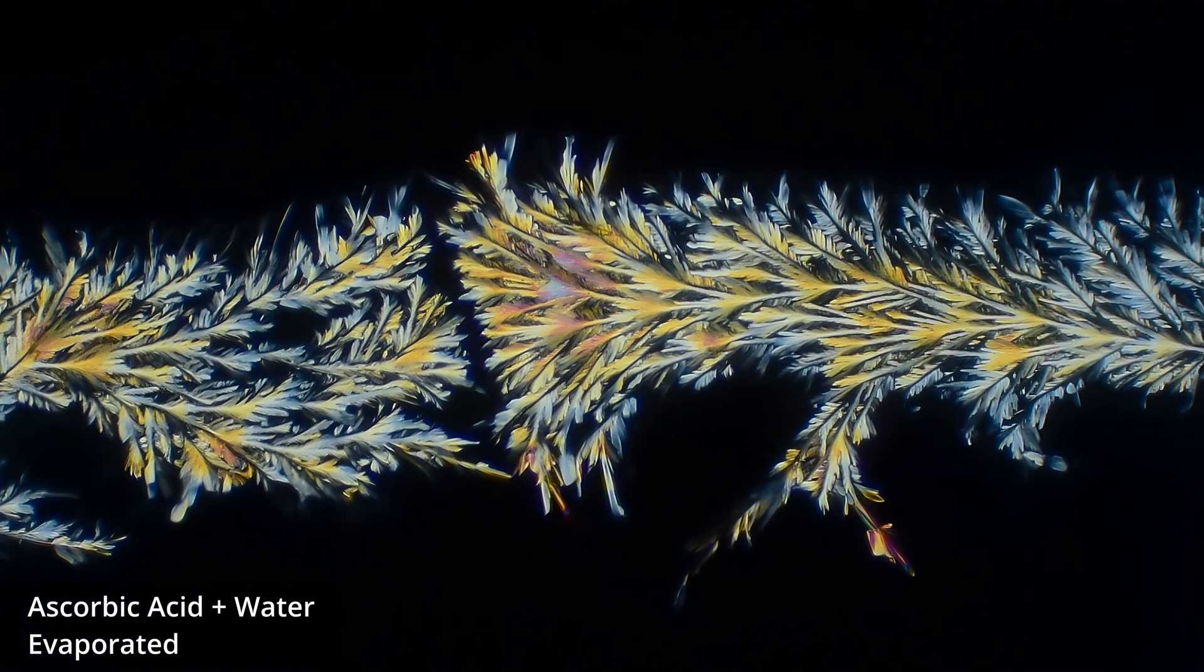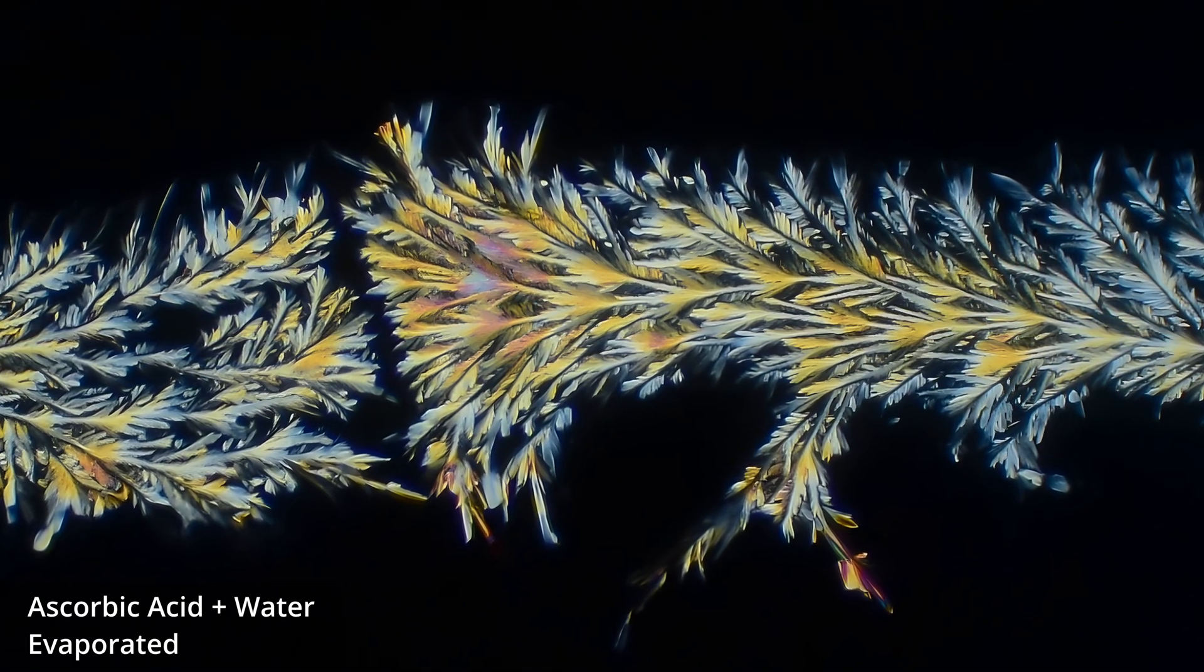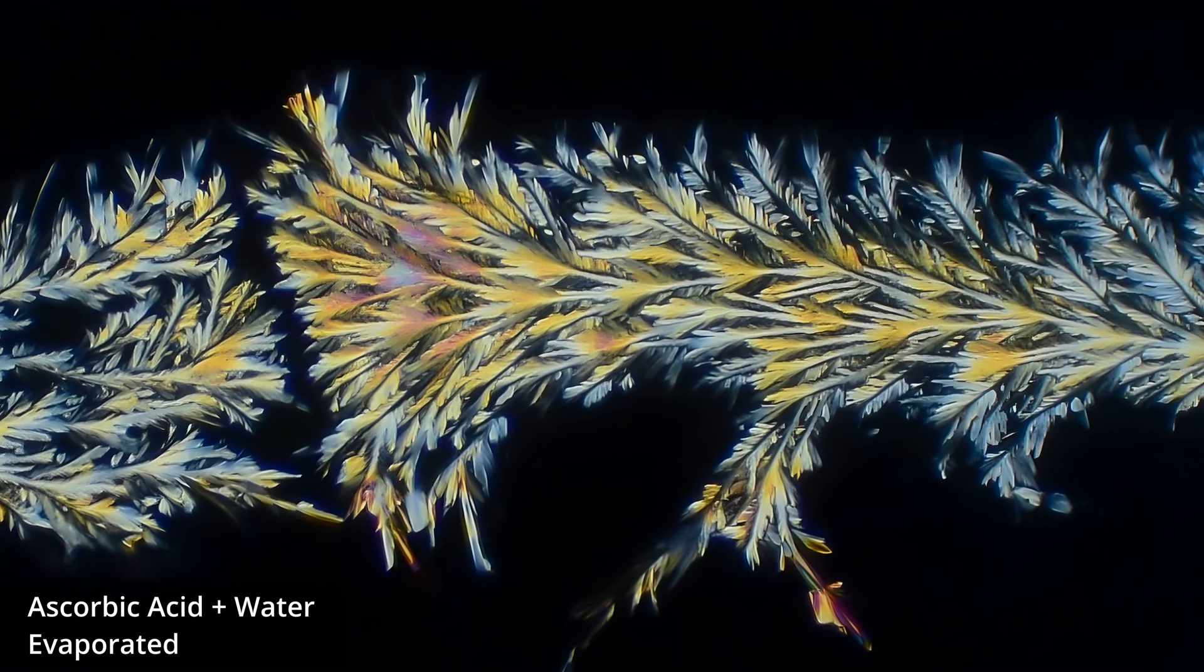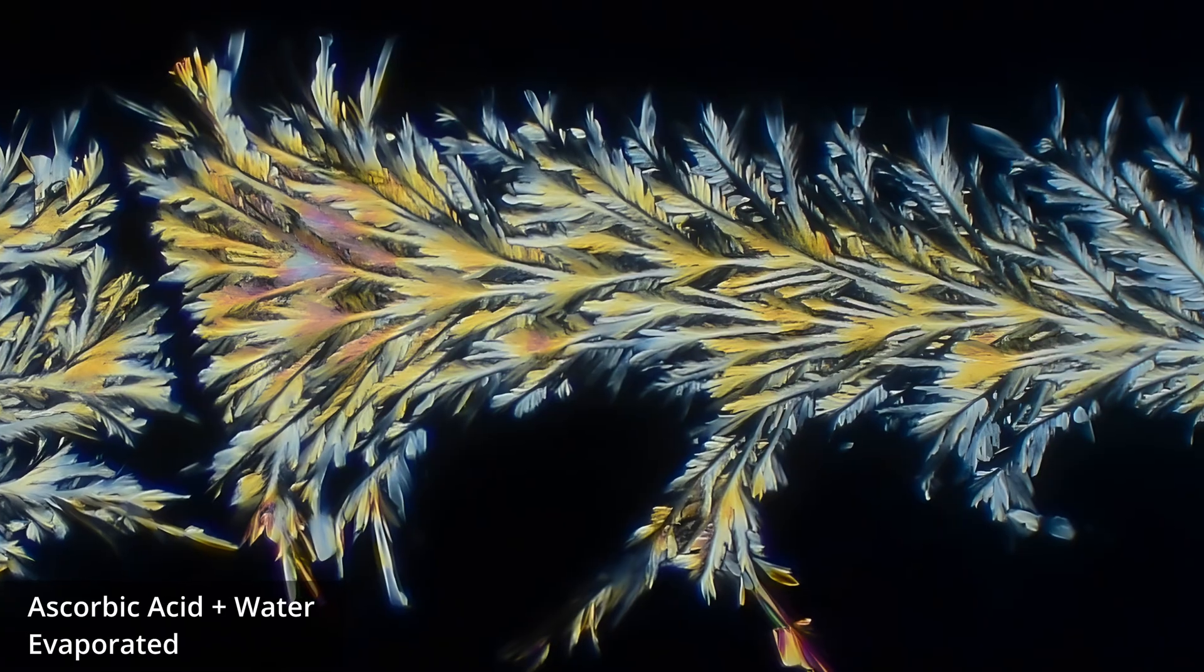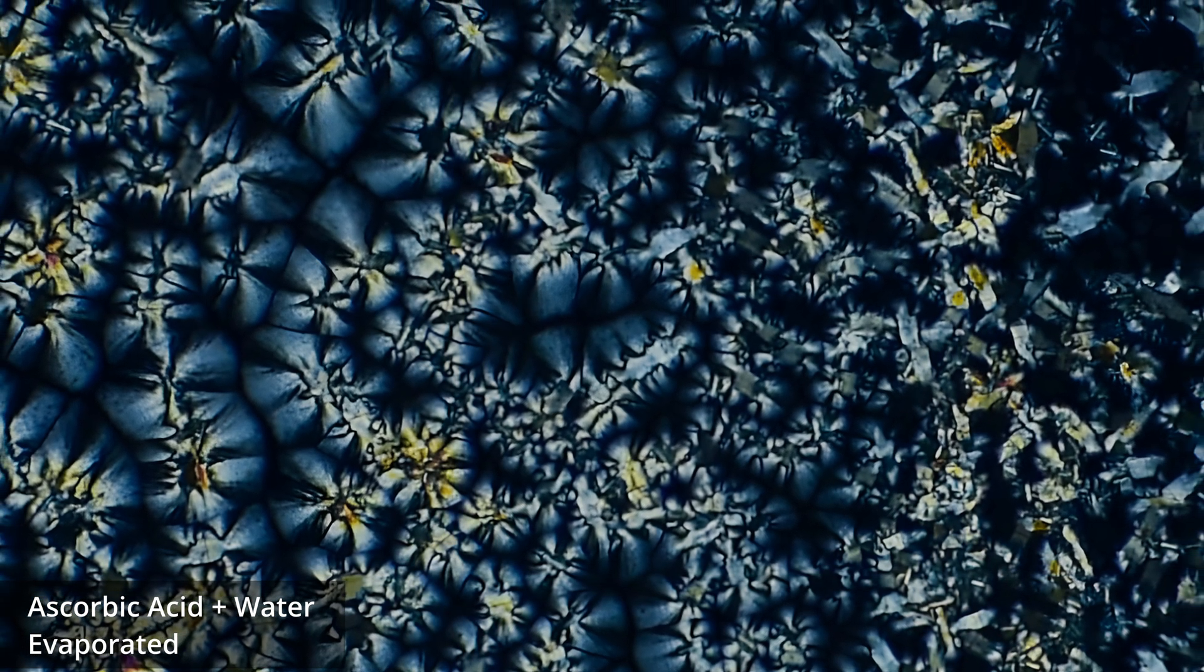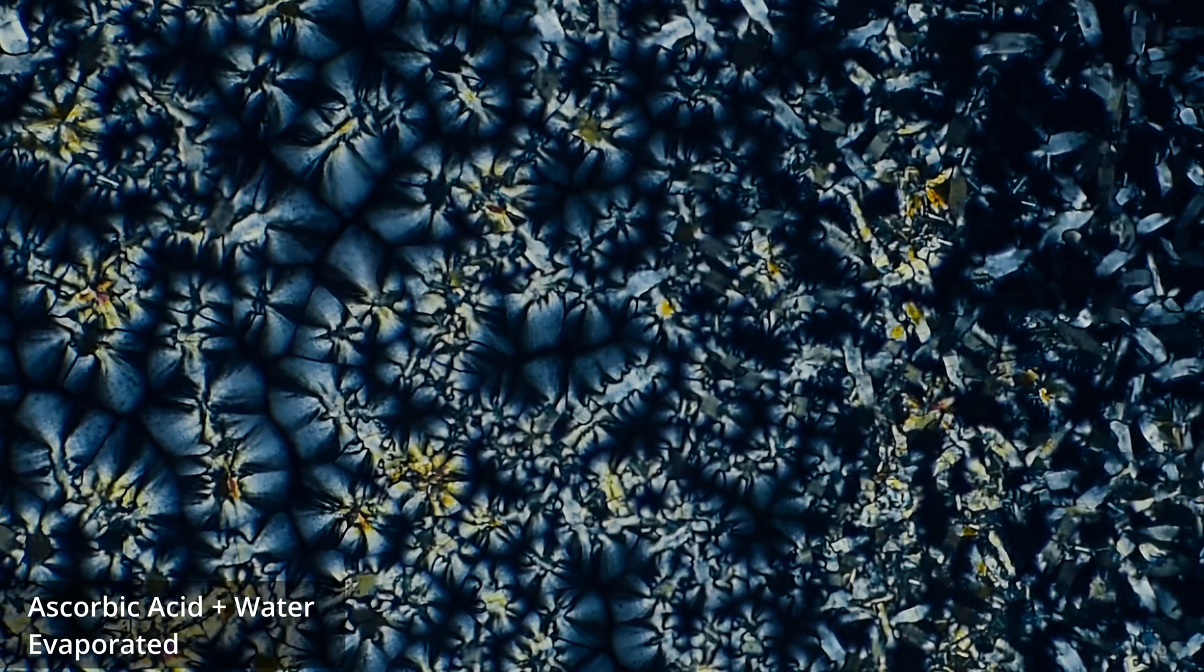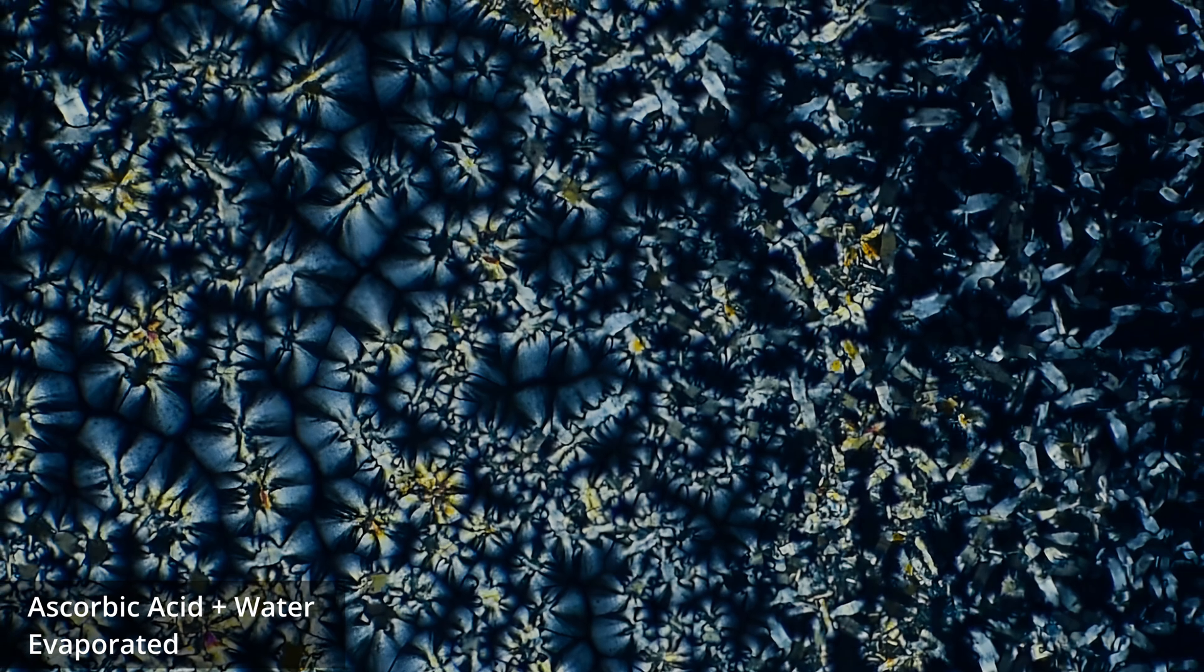But why does our evaporated ascorbic acid look like delicate branches rather than flowing structures? The answer lies in the details. I gently heated the slide to speed evaporation, which completely changes the crystallization dynamics. Fast evaporation creates rapid supersaturation, favoring the formation of many small nucleation sites that grow outward in branching patterns. That's exactly what we see here.